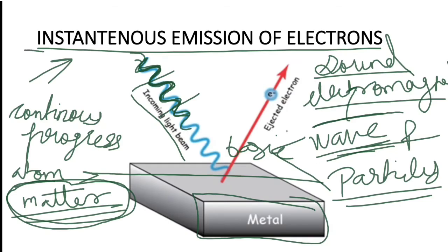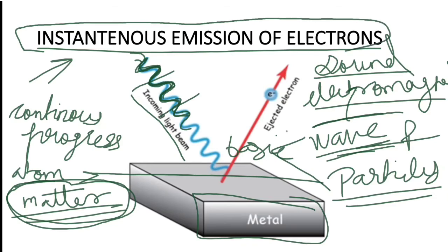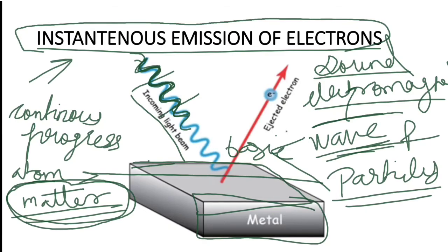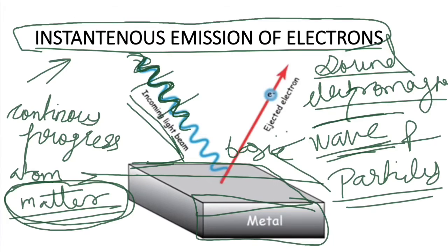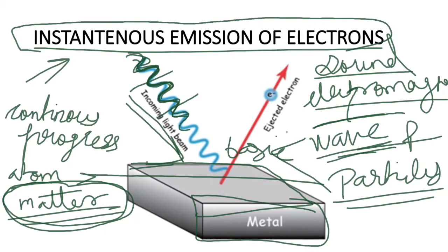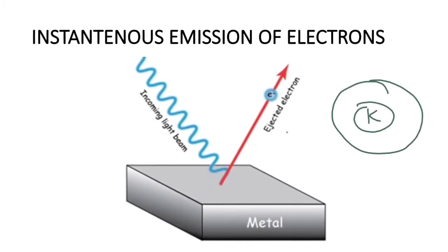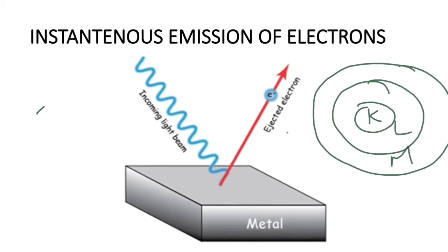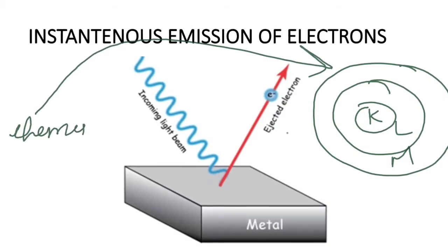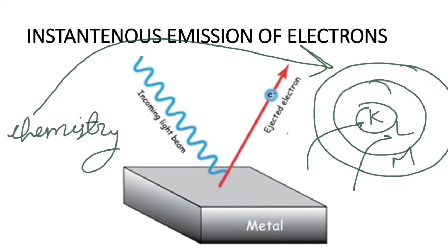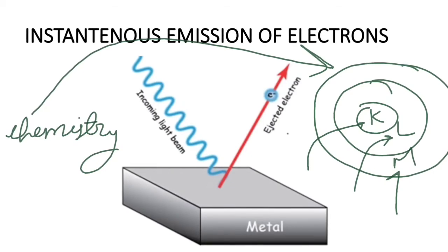Now, what did we do regarding instantaneous emission of electrons? We studied photoelectric emissions. This is a metal surface — the effect here is different. When an incident or incoming light beam passes on this specific metal surface, what happens? We talked about this in the last video — K shell, L shell, and M shell, and the emission or ejection of electrons from the metal surface.